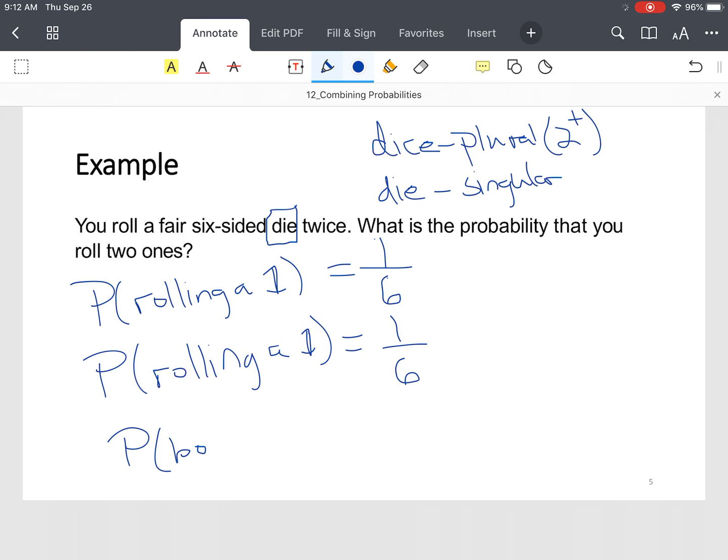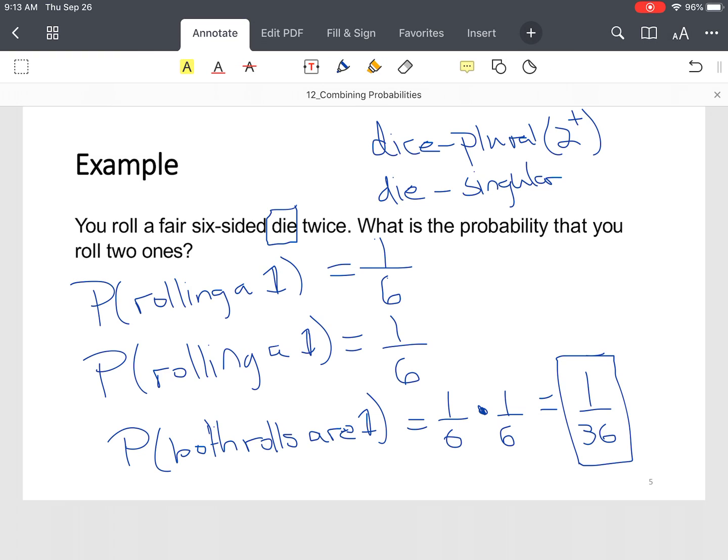So, the first time you roll that die, there's only one, one on a die. That's six possible or six-sided. Second time you roll, probability is one out of six. So, probability that both rolls are one. It's one out of six times one out of six, which is one out of 36. Okay? And again, depending on the question, provide the answer in the form that's being requested.